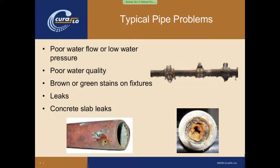Starting with typical pipe problems, most of these are fairly straightforward. Poor water flow or low water pressure is one of the more common ones in older buildings, especially high-rise buildings. Tenants have issues with low water flow, and the higher up in the building they are, the worse it gets. Poor water quality typically involves red or brown water or small red particulate coming out of a faucet, or even clogging the strainer of a faucet.